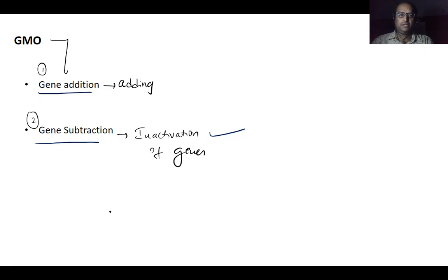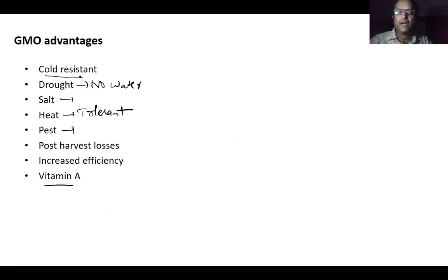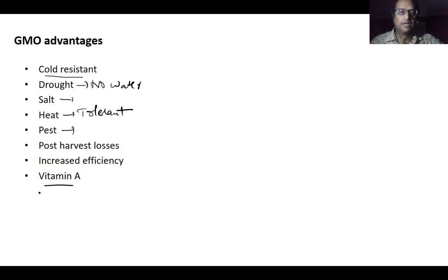GMO advantages include developing varieties of transgenic plants such as cold-resistant plants, drought-resistant plants that require less water, salt-tolerant, heat-tolerant, and pest-tolerant plants, as well as reducing post-harvest losses. GMOs also improve efficiencies and can address vitamin A deficiency, as in the case of Golden Rice.